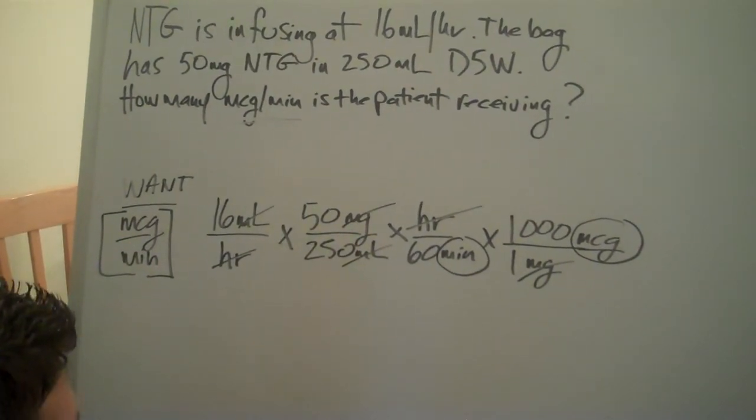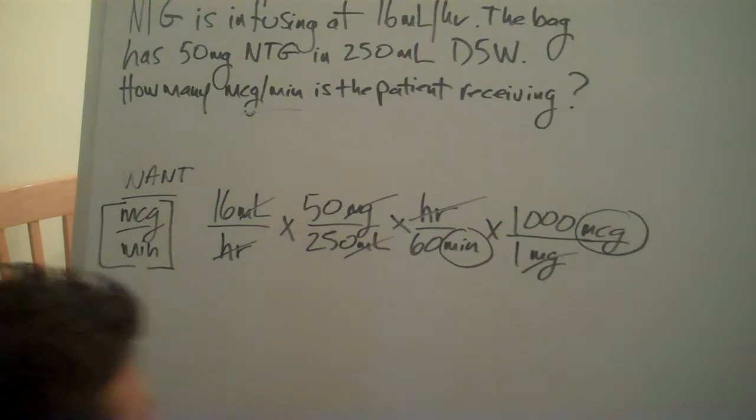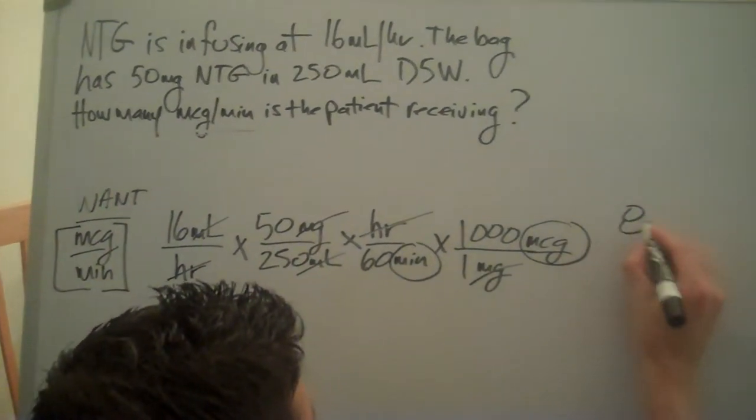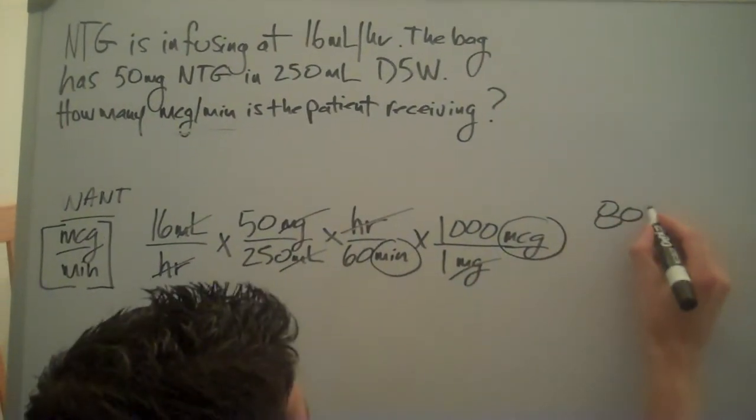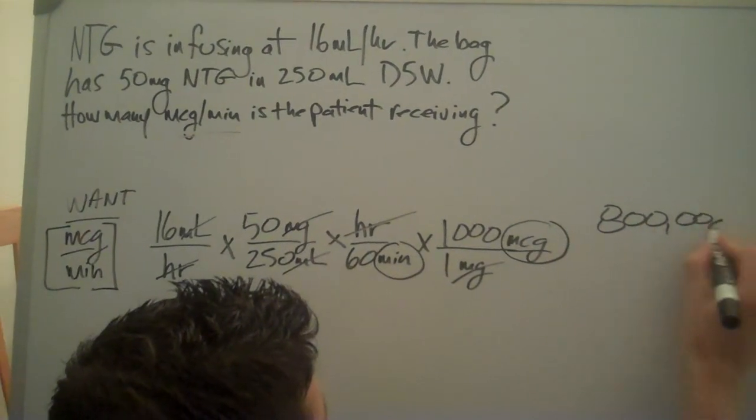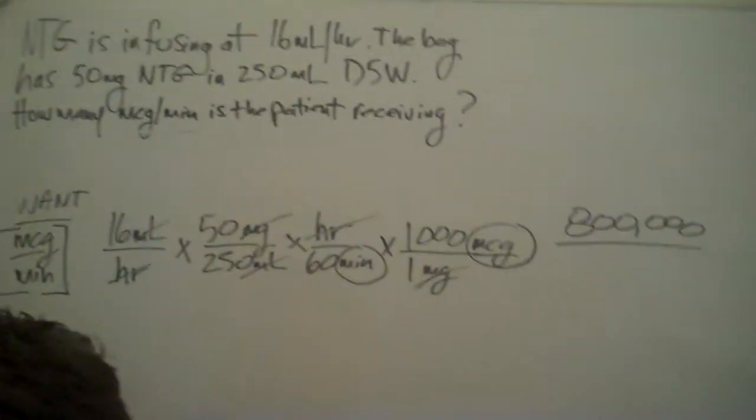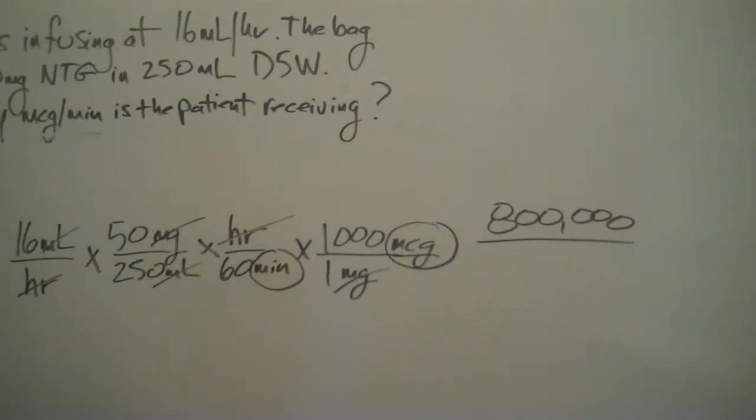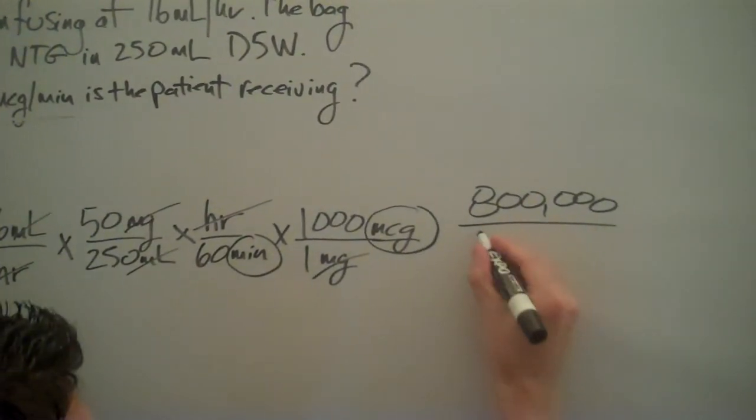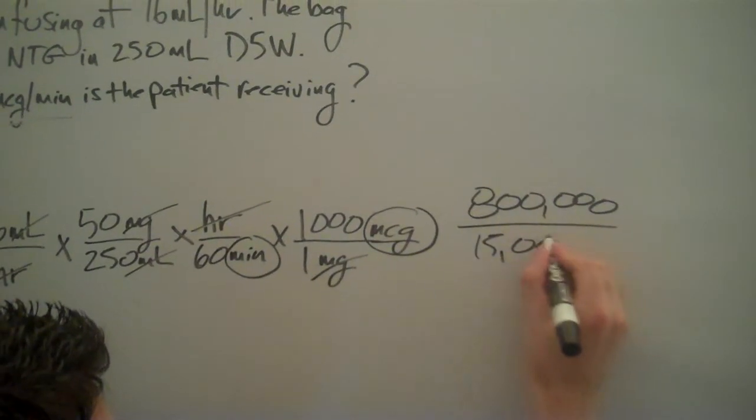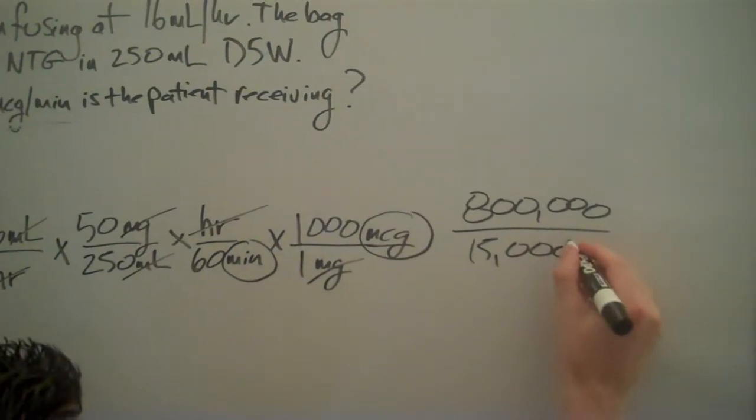You can make life a little bit easier. I should have crossed out the zeros, but if you don't, we get 800,000 on top. We have 250 times 60 below, which is 15,000, and I'm going to cross out these zeros right now.